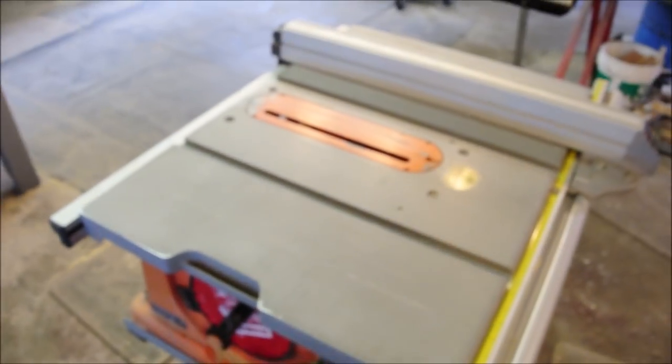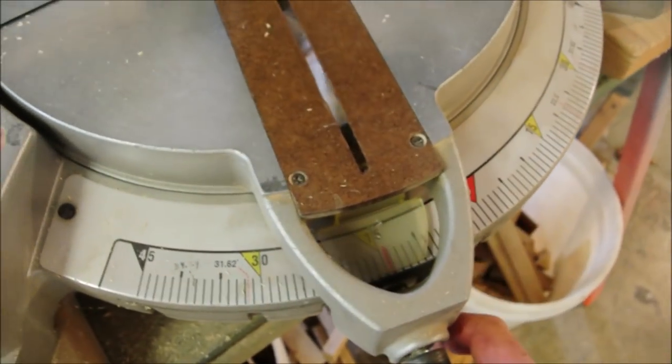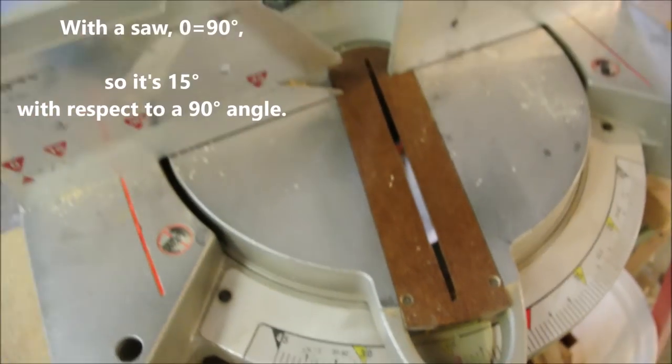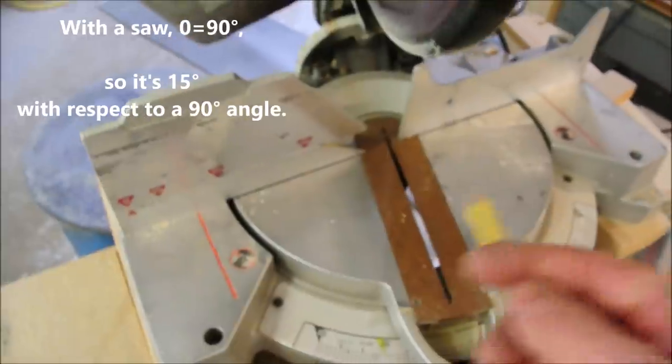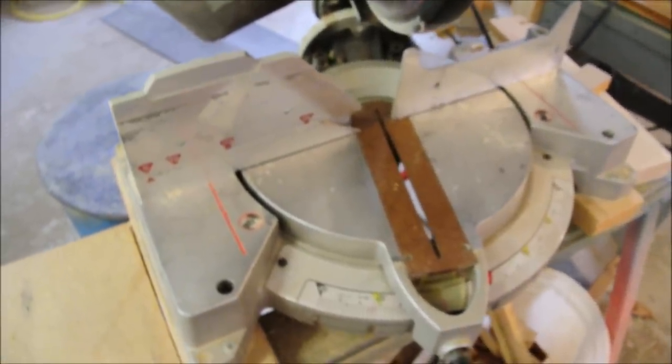And coincidentally, and conveniently, that's exactly how all of our saws work. When we set the miter saw to 15 degrees, that's 15 degrees away from zero. That's why that number looks nothing like the 15 degrees on a protractor.